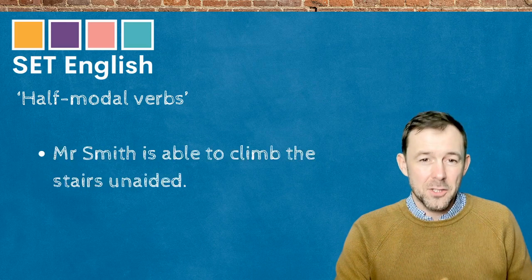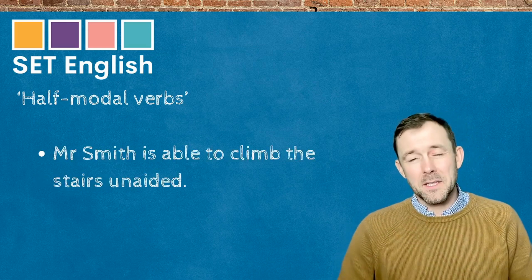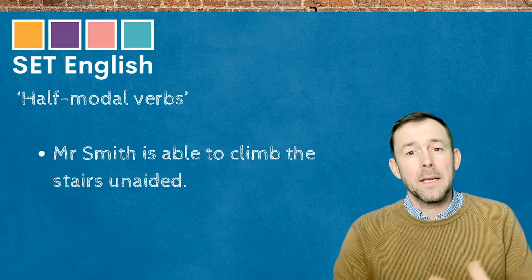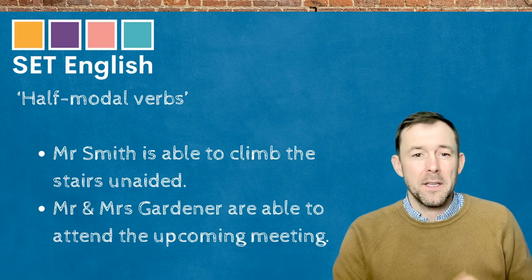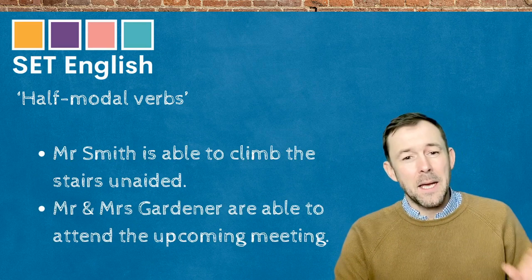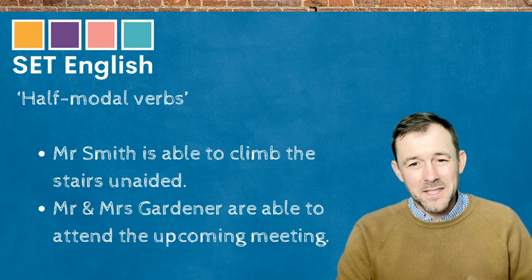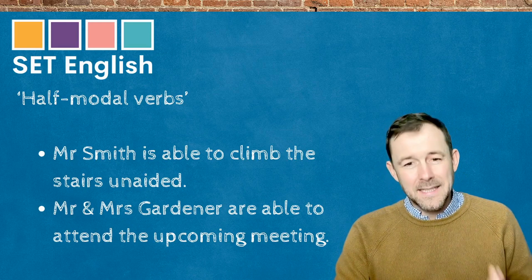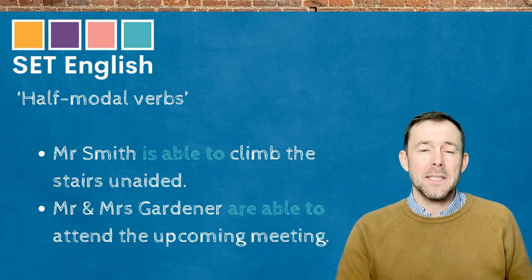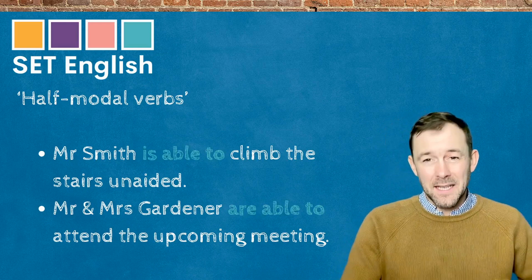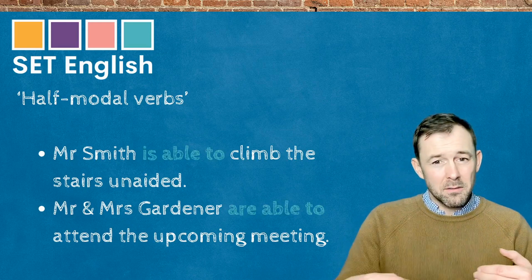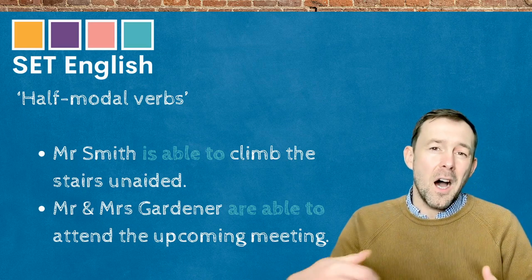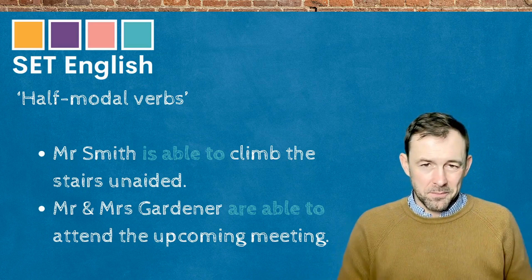So: Mr. Smith is able to climb the stairs unaided. Mr. and Mrs. Gardner are able to attend the upcoming meeting. We can see 'Mr. Smith is able to' and 'Mr. and Mrs. Gardner are able to.'